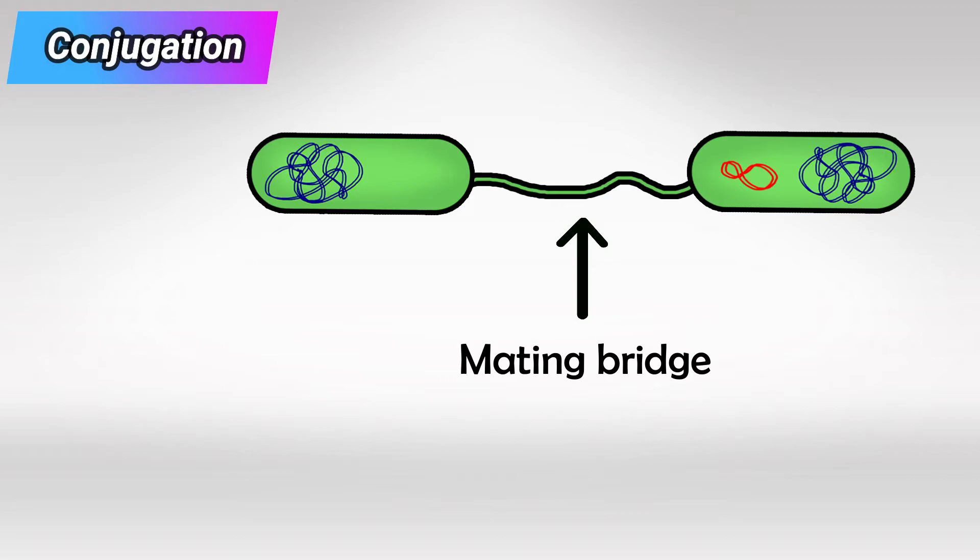It then forms the mating bridge with the F negative bacteria and transfers both of these copies to the recipient bacteria.